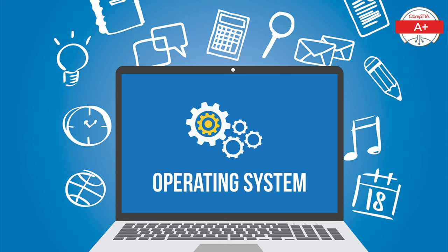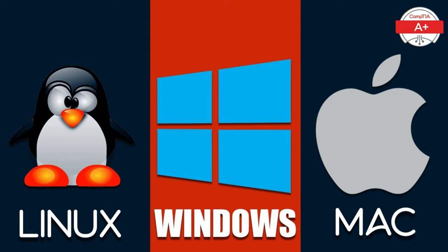Finally, you will need an operating system to run your computer. The operating system, or OS, is the software that manages all the hardware and software on your PC. Popular choices include Windows, which is user-friendly and supports a wide range of applications; Linux, which is open source and highly customizable; and macOS, which is known for its sleek design and integration with other Apple products. Choose the one that best fits your needs and preferences.